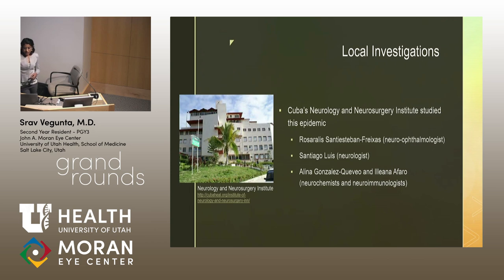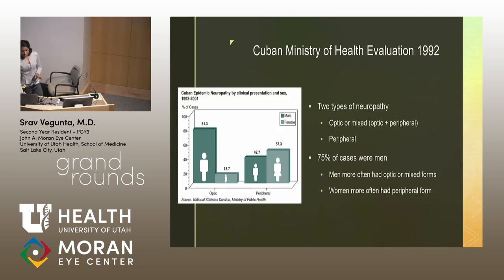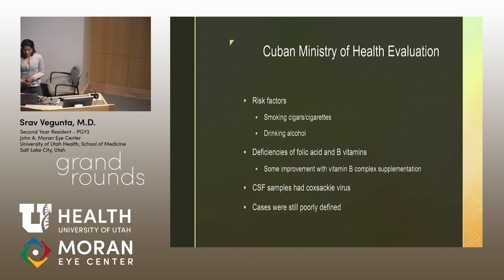The Cuban Neurology and Neurosurgery Institute started studying this to figure out the cause of the vision loss, and many of those researchers are still publishing on this topic today. The Cuban Ministry of Health found two types of neuropathy: an optic form, which affected men more significantly, and a peripheral form, which affected women slightly more. Risk factors isolated included smoking cigars and cigarettes, drinking alcohol, and deficiencies in folic acid and B vitamins. Lumbar punctures showed CSF studies positive for Coxsackie virus, but cases were still poorly defined.